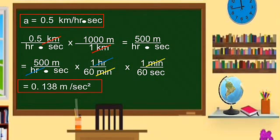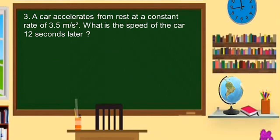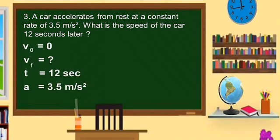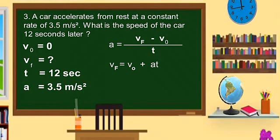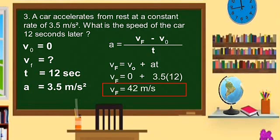Let us have another example. A car accelerates from rest at a constant rate of 3.5 meters per second squared. What is the speed of the car 12 seconds later? The initial velocity is 0 because the car starts from rest. The final velocity is unknown. The time is 12 seconds and the acceleration is 3.5 meters per second squared. Using the formula: final velocity equals initial velocity plus acceleration times time, we substitute 0 plus 3.5 times 12, giving a final velocity equal to 42 meters per second.